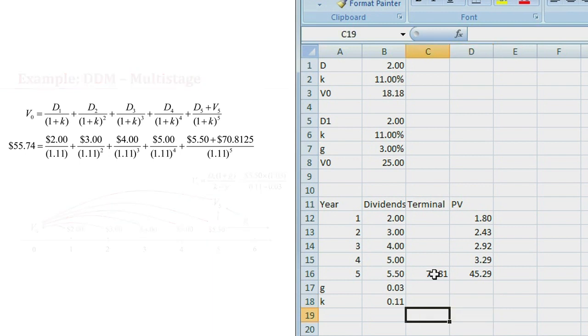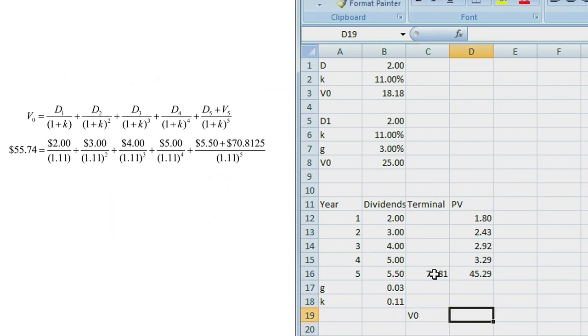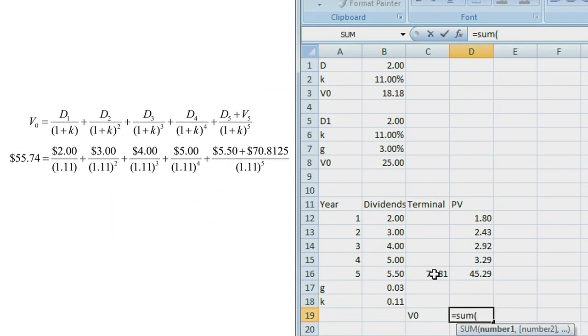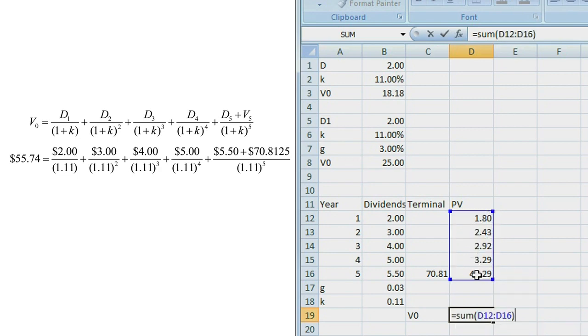Now to get the value of the stock then at time 0 we're just going to take the sum of all of these present values. And again we see that that value is $55.74.